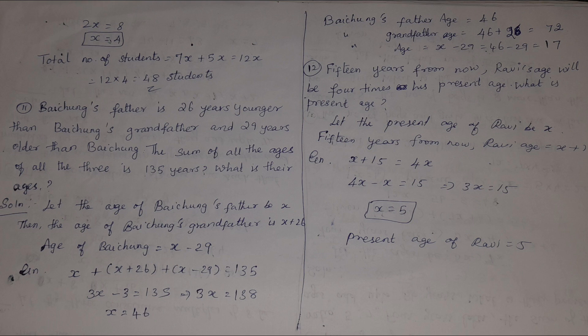Eleventh problem: Paijung's father is 26 years younger than Paijung's grandfather and 29 years older than Paijung. The sum of all three ages is 135 years. Let father's age be x; grandfather is x + 26, Paijung is x minus 29. Adding all three: 3x + (26 - 29) = 135, so 3x = 138, x = 46. Father is 46, grandfather is 72, Paijung is 17.